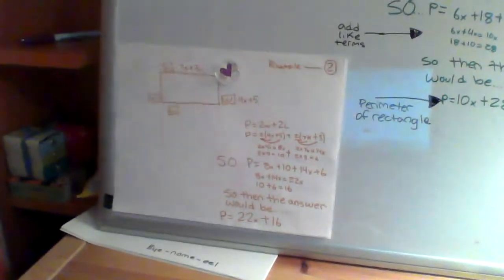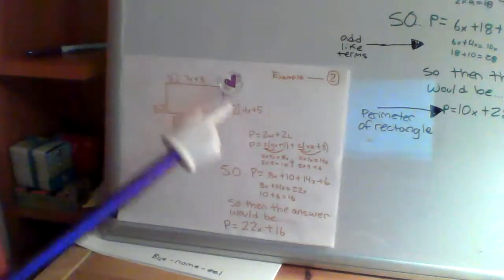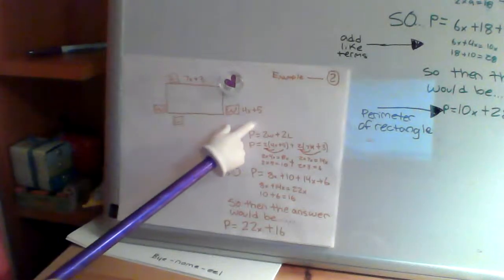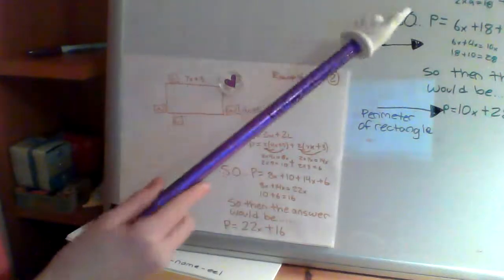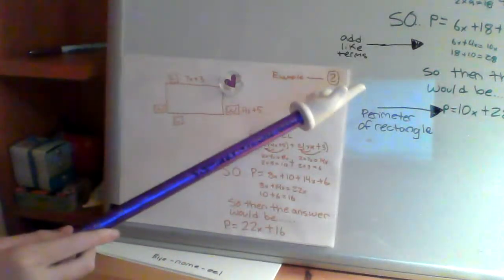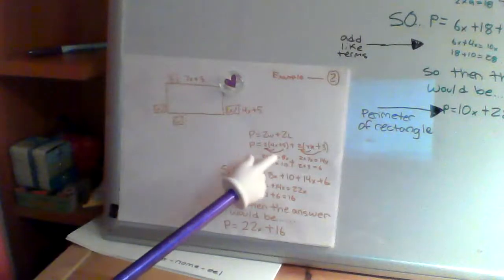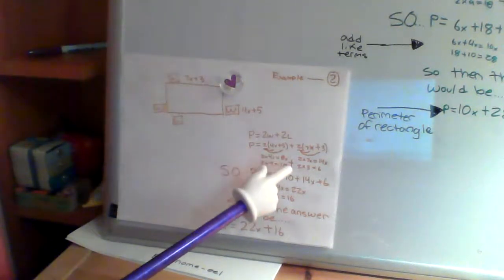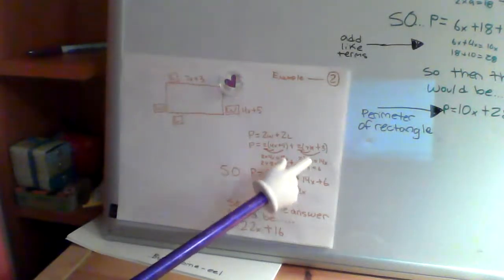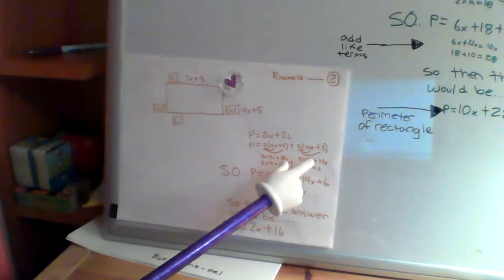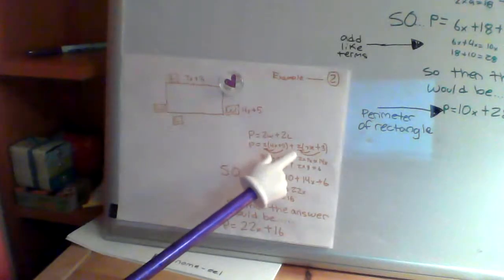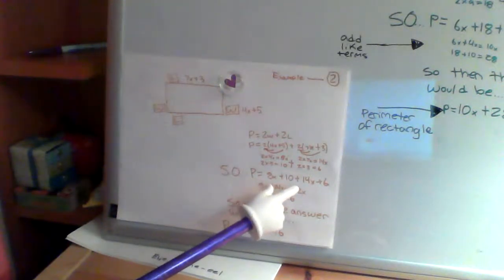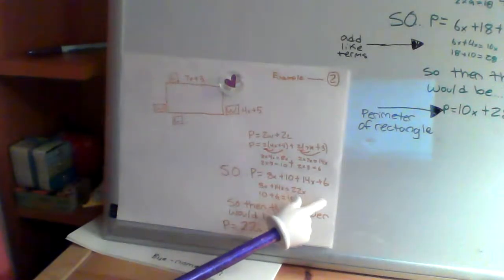For another example, I have another rectangle, which has a length of 7X plus 3 and a width of 4X plus 5. You do the same thing as before, but with different numbers. So you do 2 times 4X, which equals 8X, and 2 times 5 equals 10. And then 2 times 7X equals 14X, and 2 times 3 equals 6. So you'd write that as 8X plus 10 plus 14X plus 6.